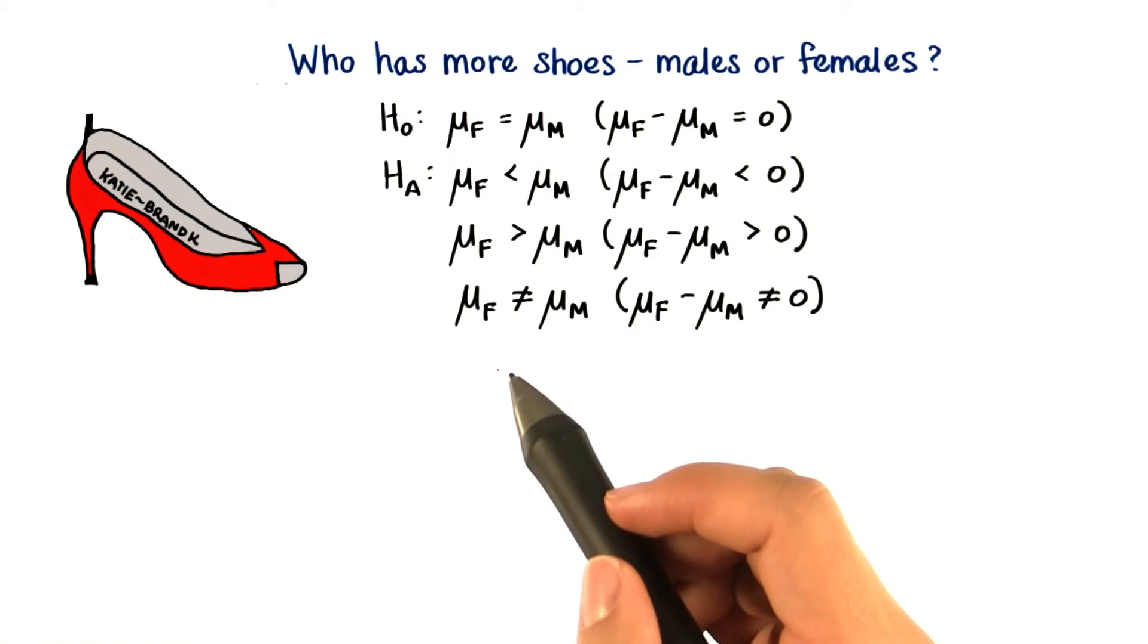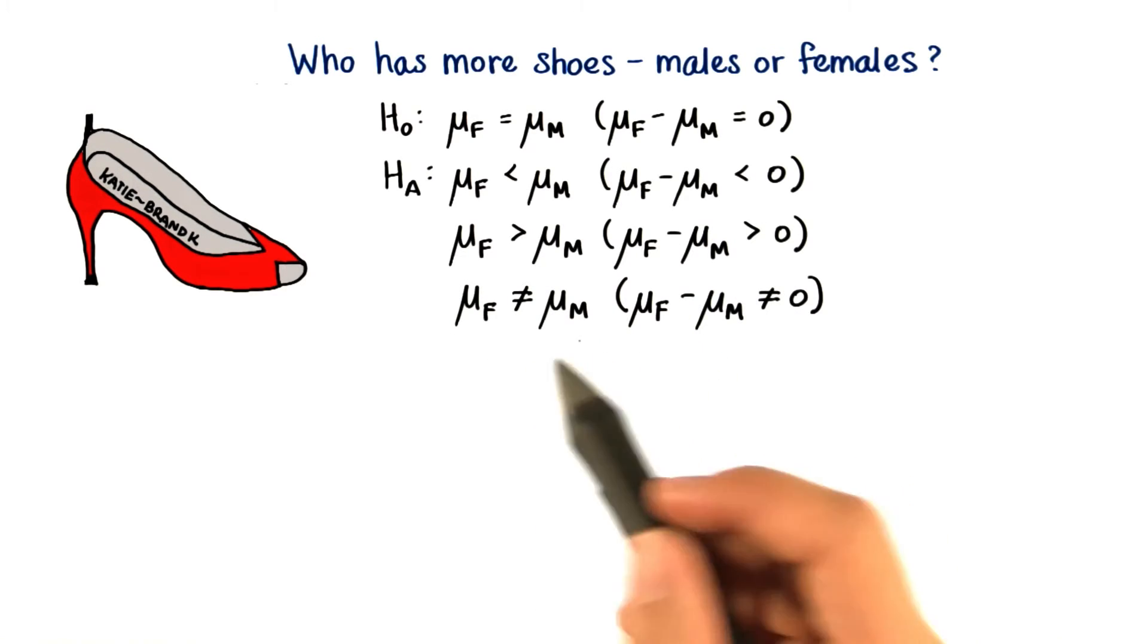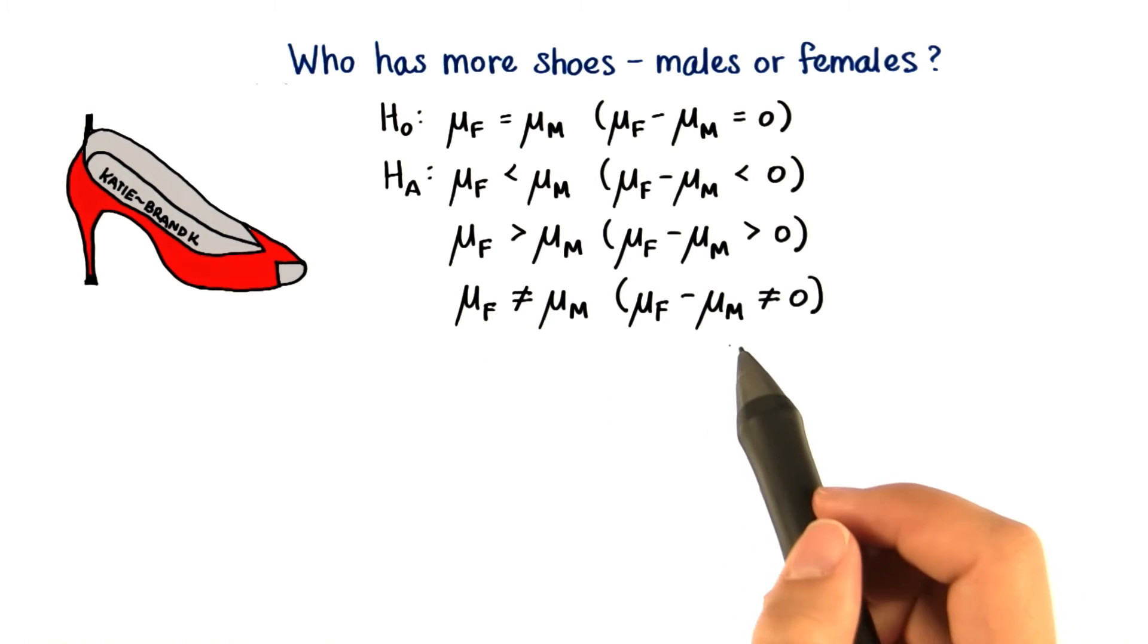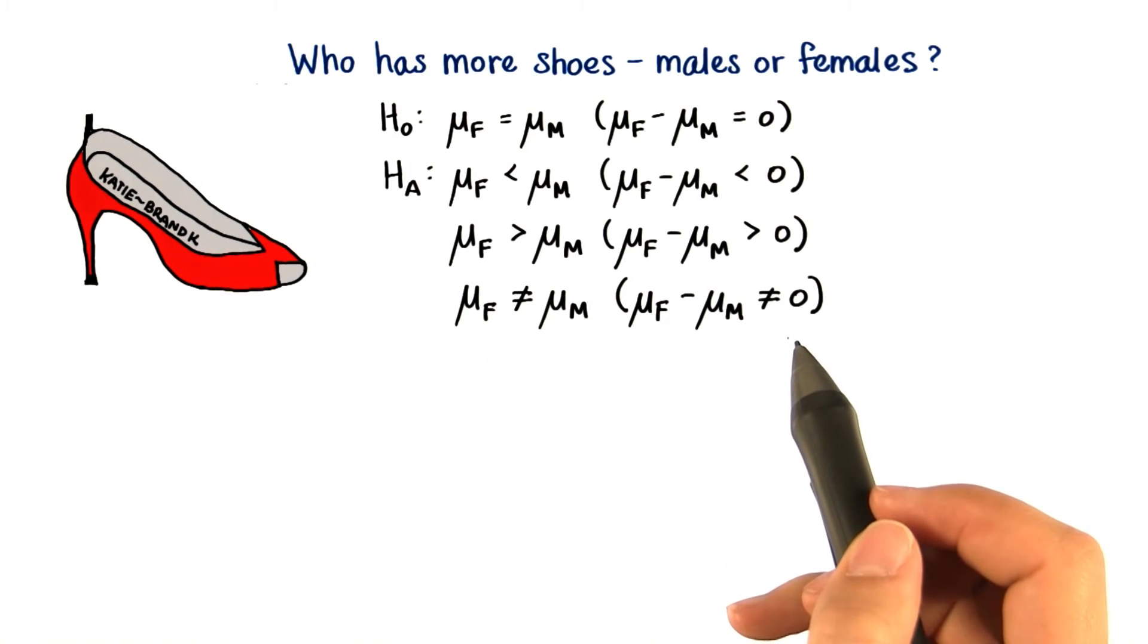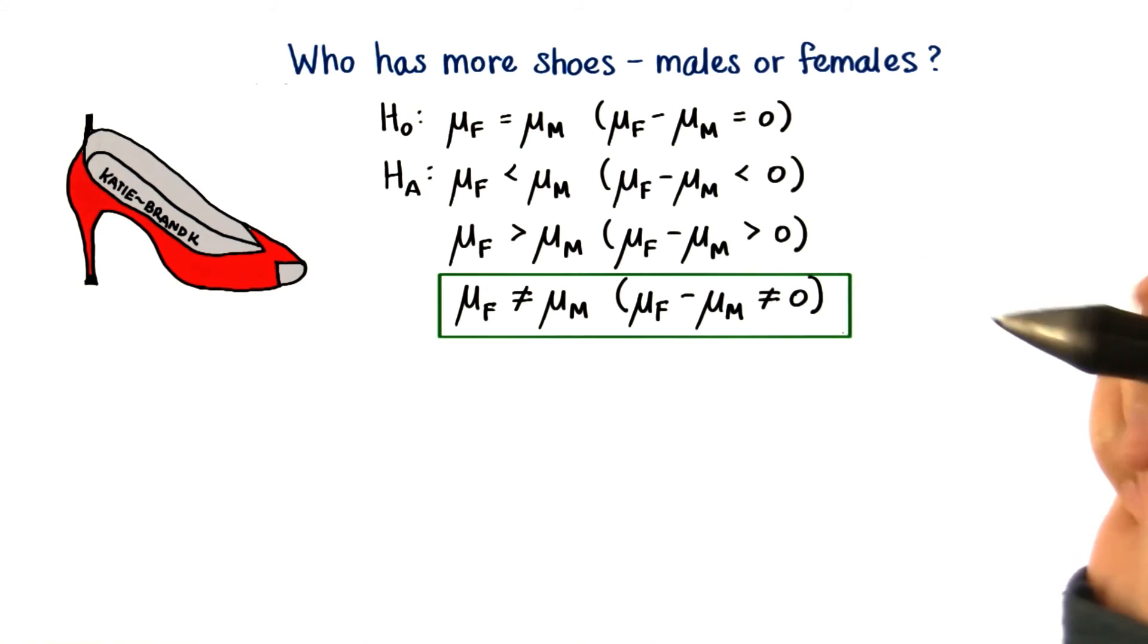And if we don't have a guess, then our alternative hypothesis will be that they're different. The difference is not significantly equal to zero. Let's go with this alternative.